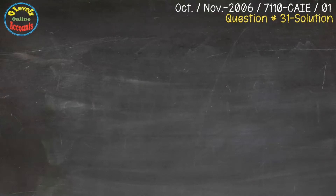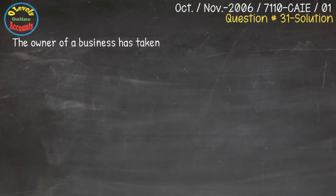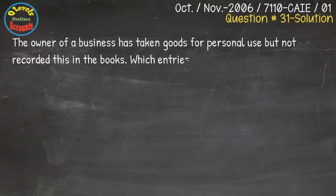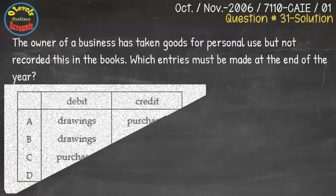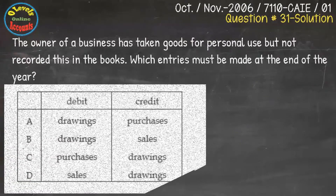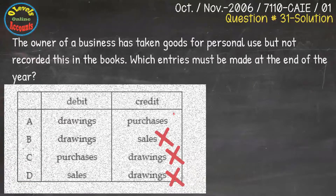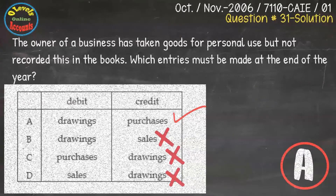We have question number 31 from October/November 2006, 7710 CAIE Paper 1. In this question, the owner has taken goods for his personal use but not recorded in the books. We know that this is a matter of drawings and the double entry would be: drawings debit and stock or purchases credit. This is the correct answer, available with the A option in the question.